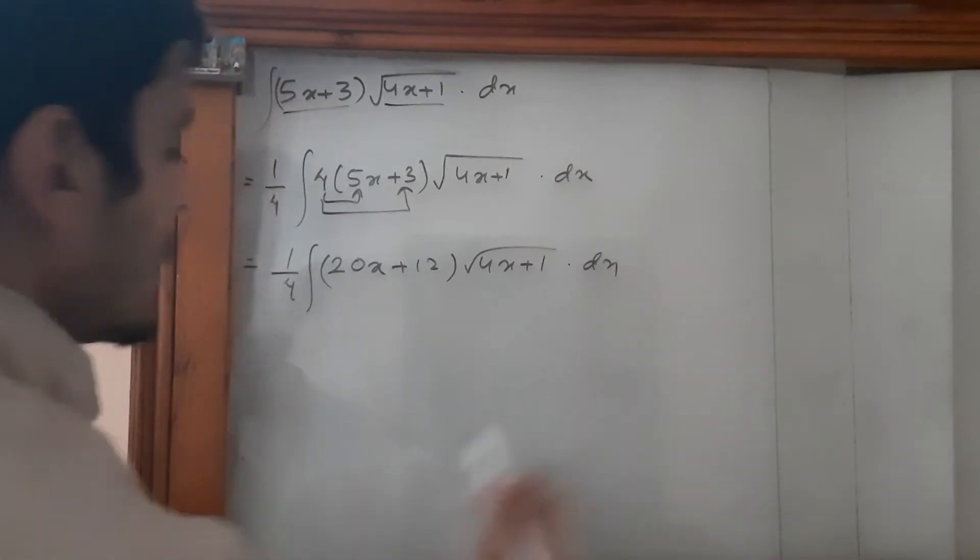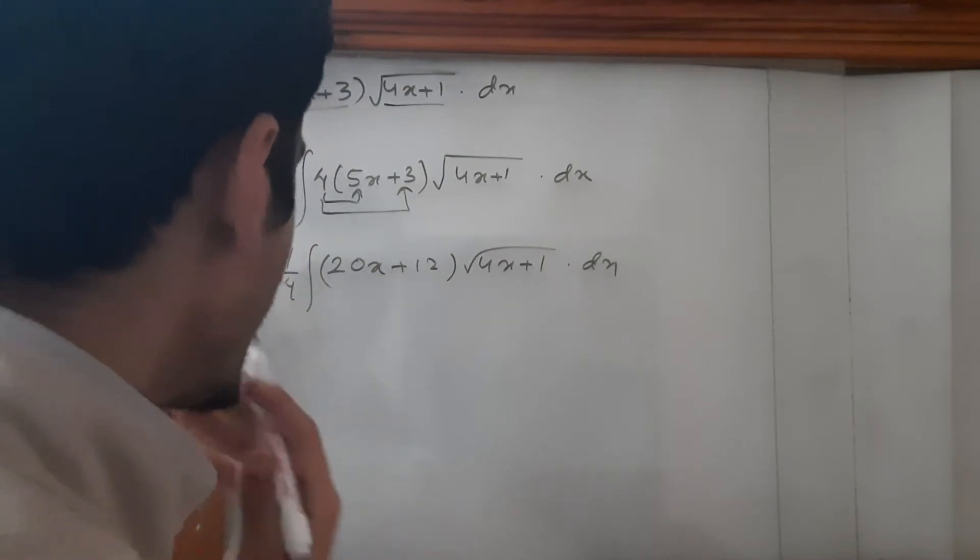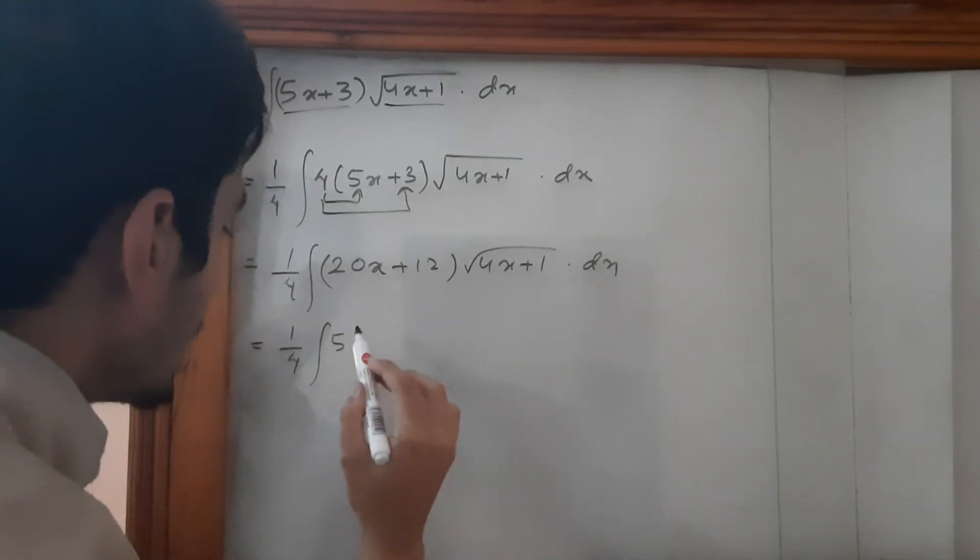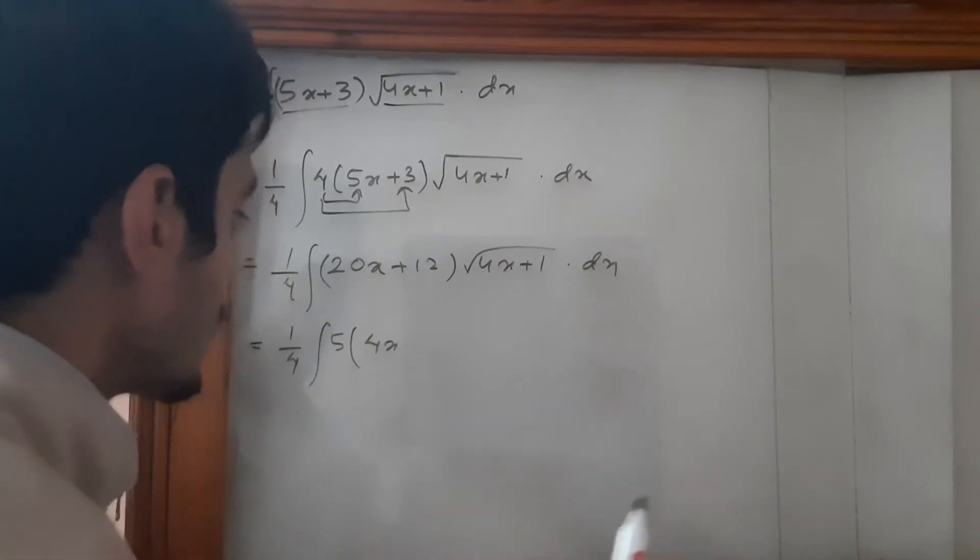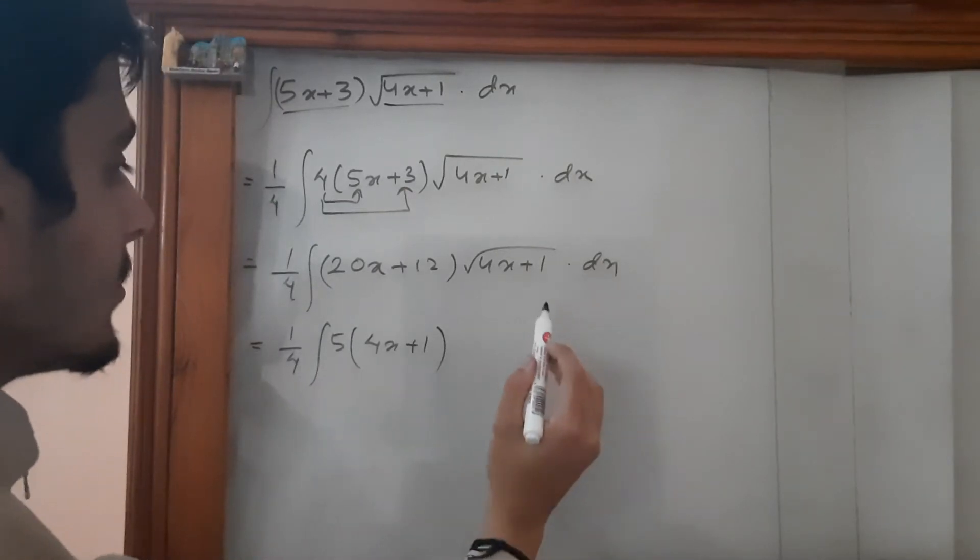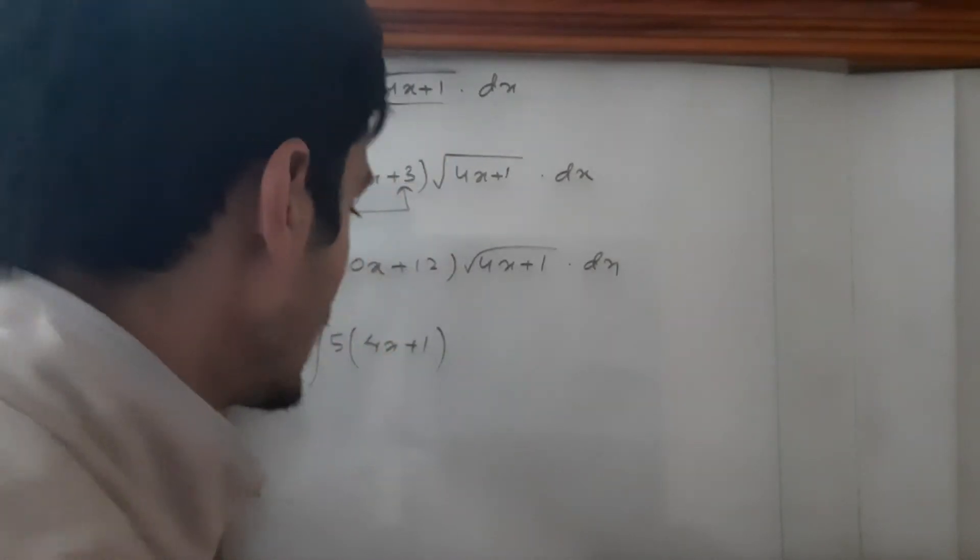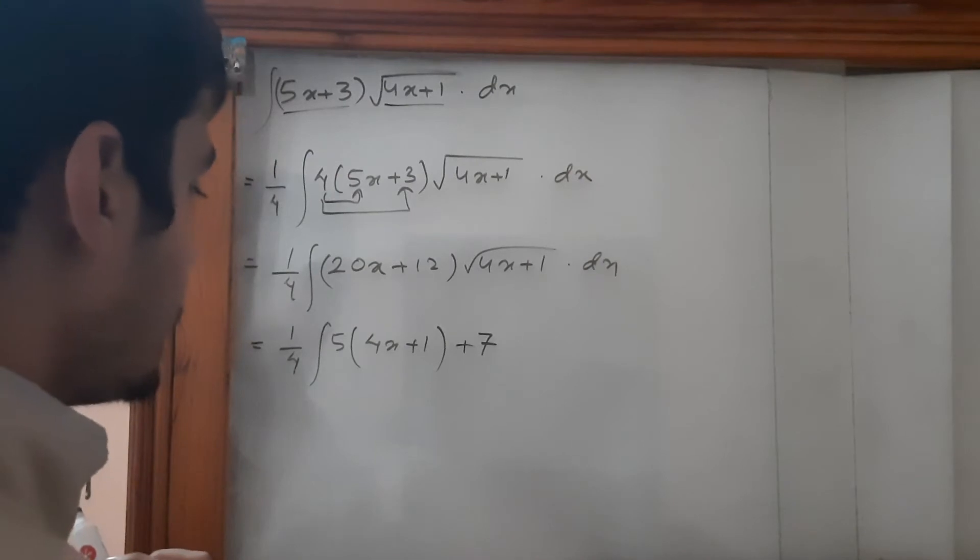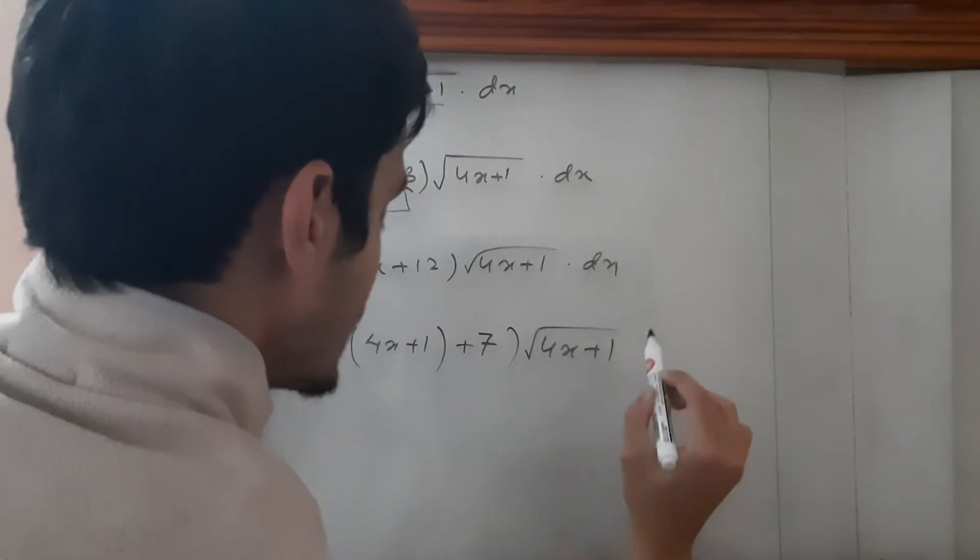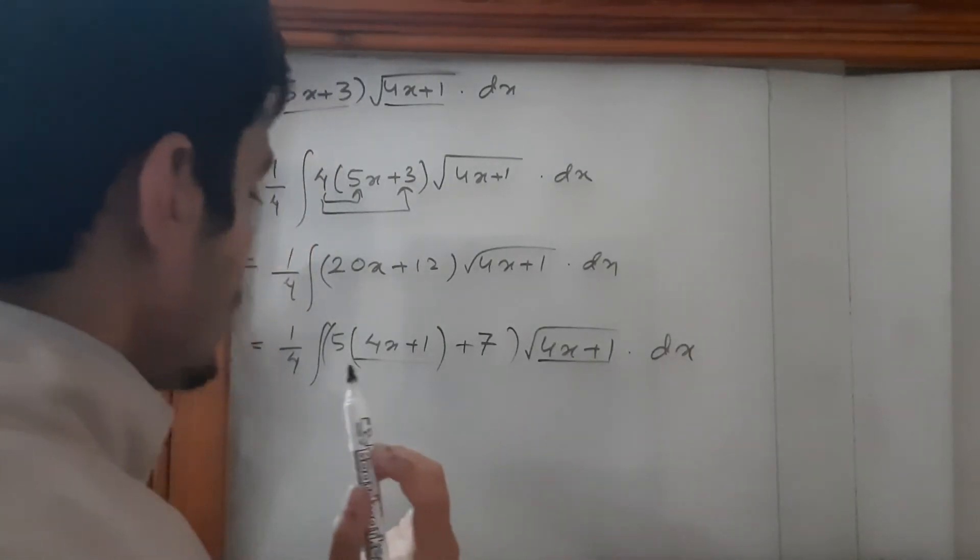Now how can we change 20x + 12 into 4x + 1? Let's do this. Let's take 5 common, so it's going to be 4x. We've got 4x, so first step is done. We need plus 1, we've got it. But then we have 12. Here we've got 5, so 5 + 7 is 12. And then 4x + 1 as it is. This is now equal to what's inside the root.